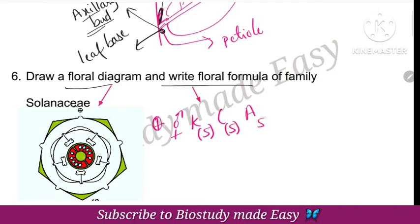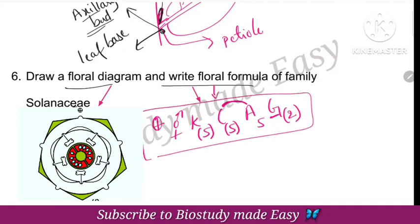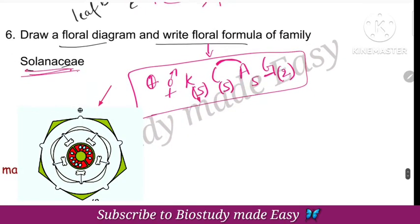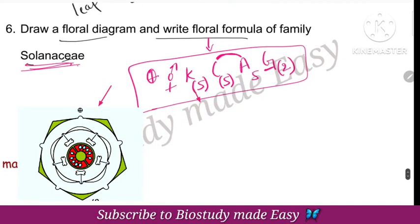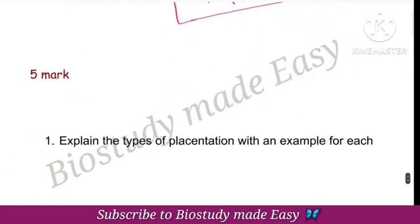Next, draw the diagram of a typical leaf. The typical leaf diagram includes the lamina, petiole, stipule, leaf base, and axillary bud. Next, draw the floral diagram and write the floral formula for the family Solanaceae. The androecium members are epipetalous. The ovary is superior.